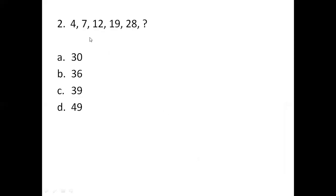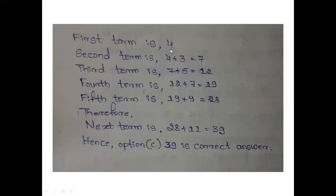Next question, 4, 7, 12, 19, 28, and missing number find out, question mark. So option A 30, option B 36, option C 39, option D 49.